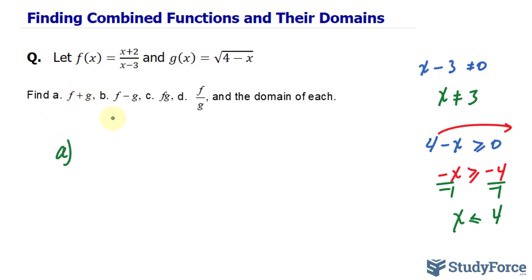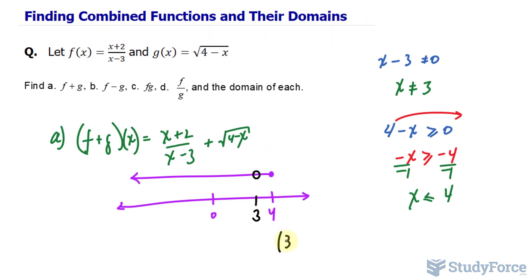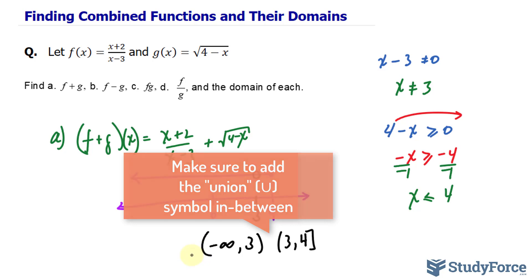Now let's do part a. We have to add, so f plus g of x equals x plus 2 over x minus 3 plus the square root of 4 minus x. Notice that the domains of each individual function satisfy the domain for this combined function. To show these on a number line, x can be 4 but has to be less than 4, and x cannot equal 3. I'll put a hollow circle at 3. So the final domain is negative infinity to 3, then 3 to 4. That's the answer for A.